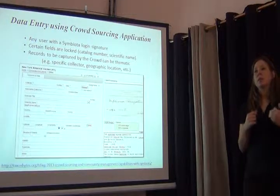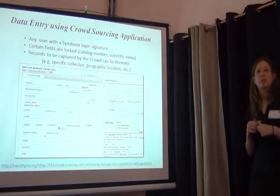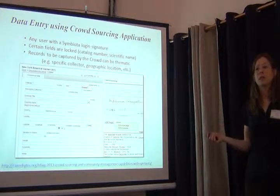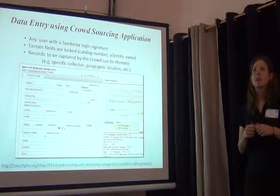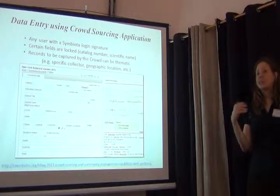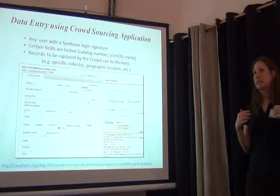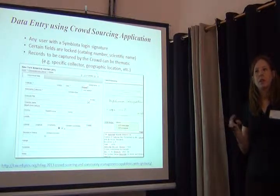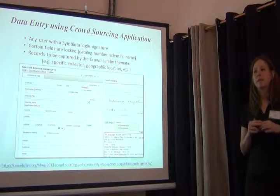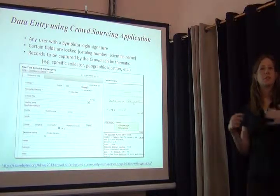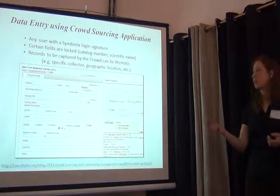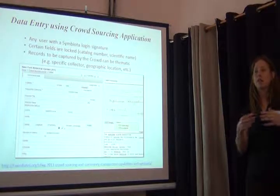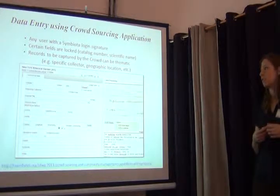A third way by which you can capture data from specimen images is to recruit the public — people who don't know anything about your collections but are interested in helping out. Symbiota has a crowdsourcing application. Behind the scenes, you select a parameter or query your database for a particular parameter, and based on that theme — say you want the public to capture specimen data for all your Wilbur Smith collections — you query for Wilbur Smith and present to the public all of those labels and ask them to capture the data from the images.